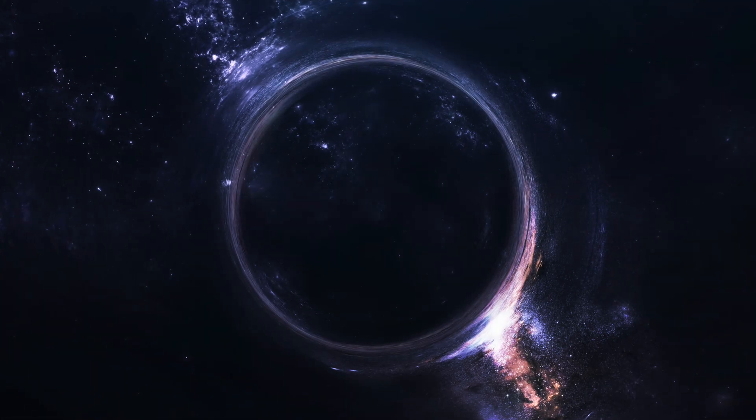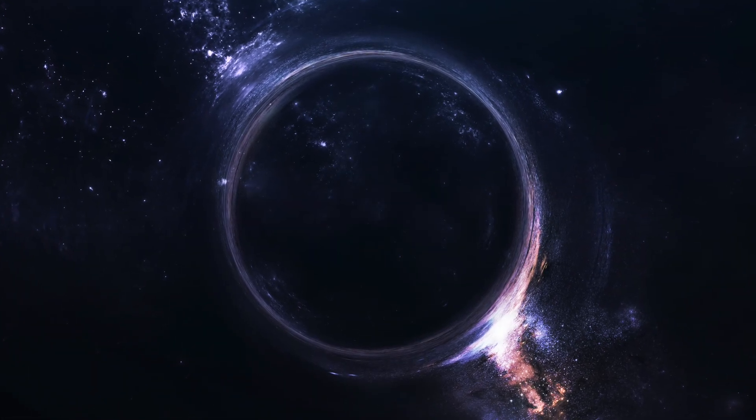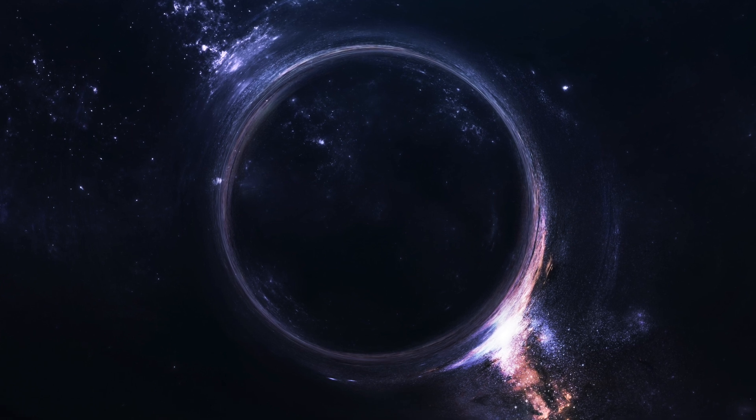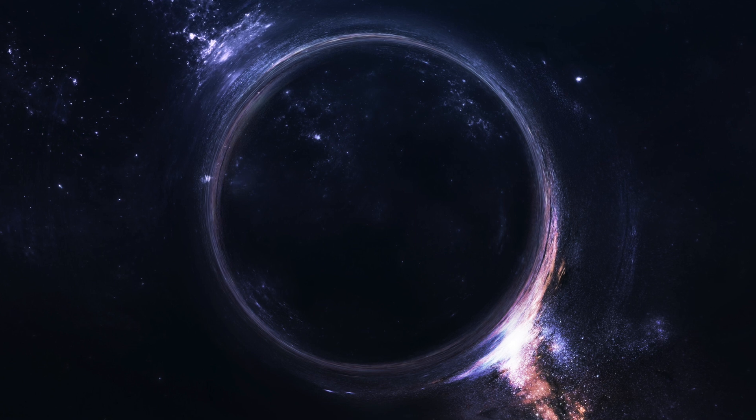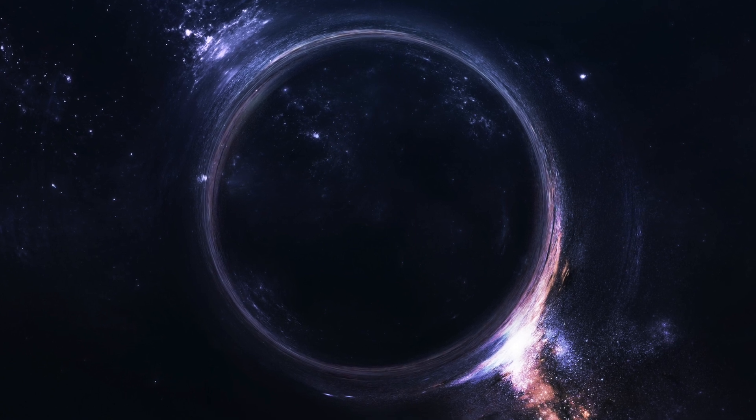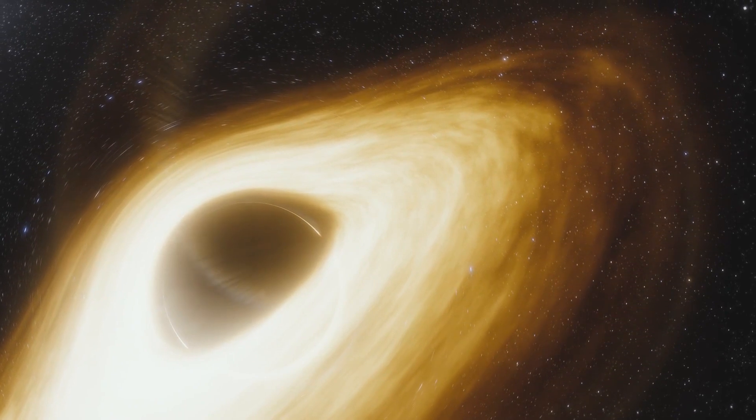When a stellar mass black hole, which is a black hole produced by the gravitational collapse of a star, is in a binary system with another star, the movement of the orbit of its partner moving around what looks like empty space is a possible indication of a black hole being present.